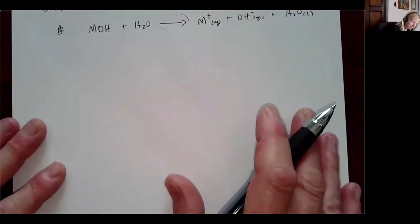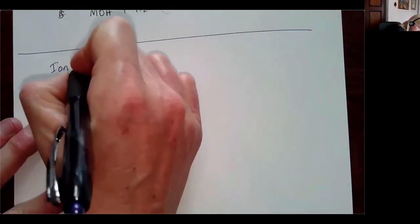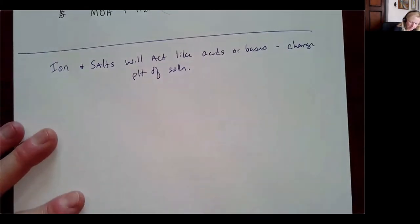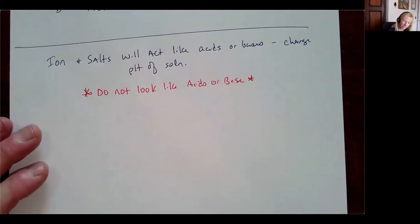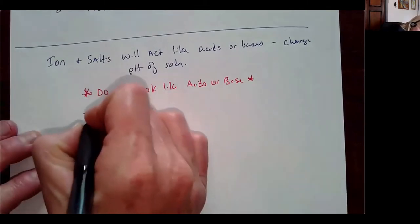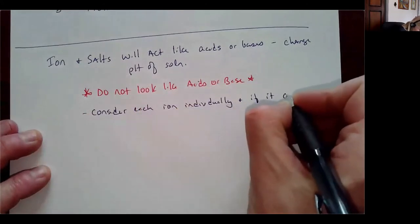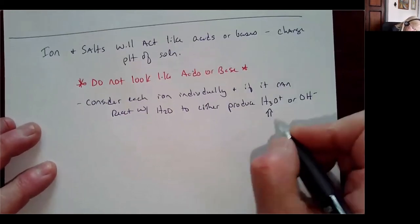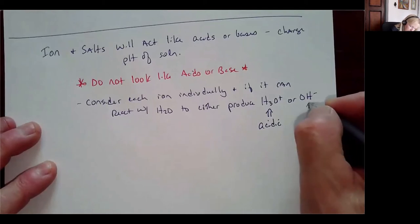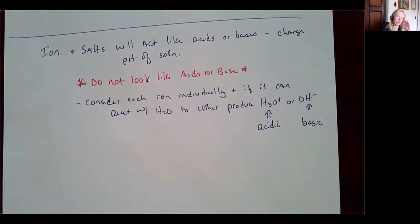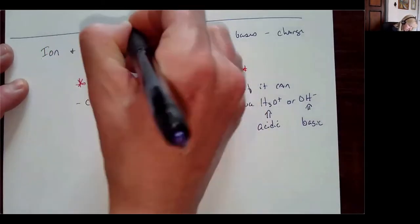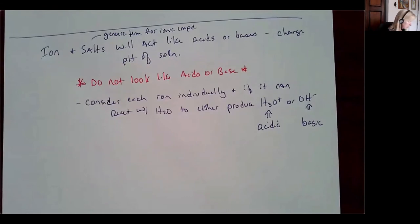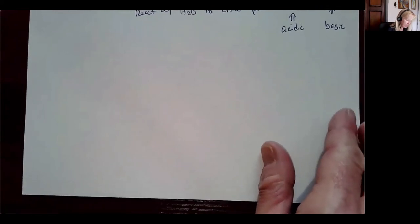The last thing to cover in this chapter: what happens if you have an ion? Sometimes ions and salts will act like acids or bases and change the pH of a solution even though they don't look like acids or bases. We're going to take each individual ion and see how it affects the solution — specifically, if it can react with water to produce H₃O⁺ or OH⁻.